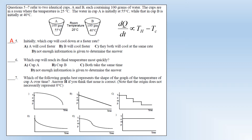Question six: which cup will reach its final temperature most quickly? The answer is B. It will take some time for cup A to cool to 40 degrees, and then cup A will take exactly the same time as cup B to cool from 40 to room temperature. Therefore cup A has to take longer overall, even though its initial rate of cooling is faster.